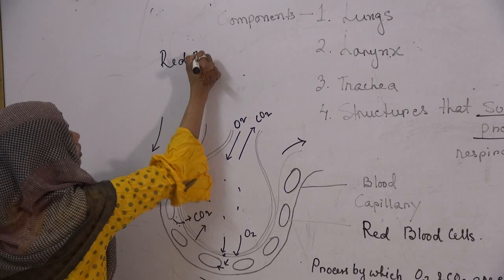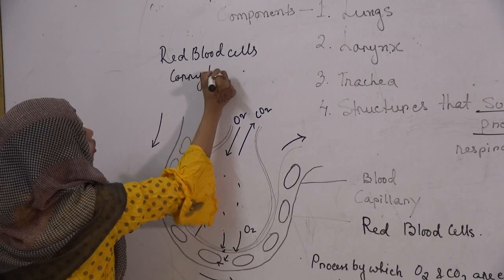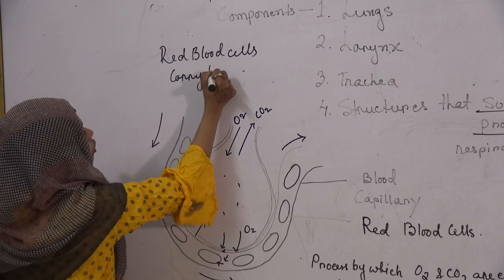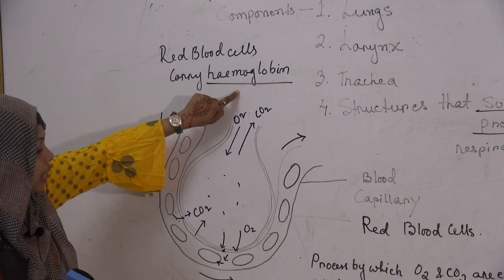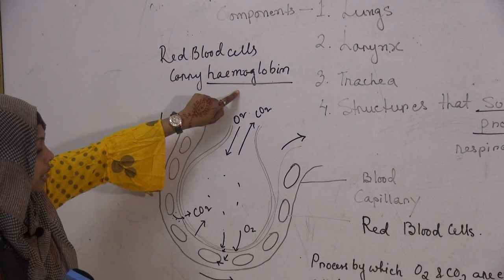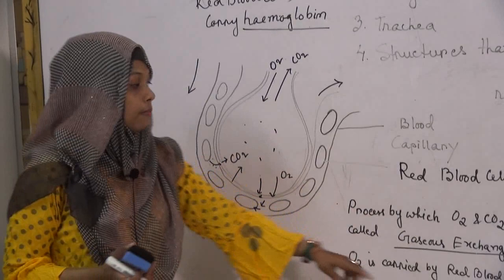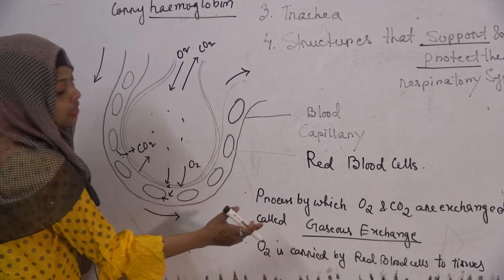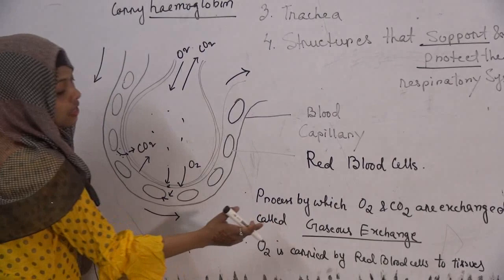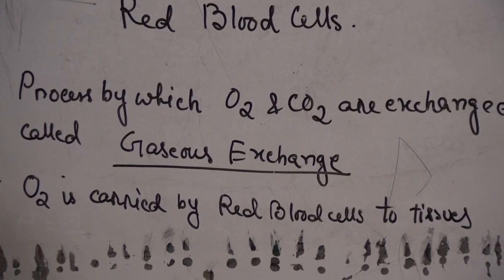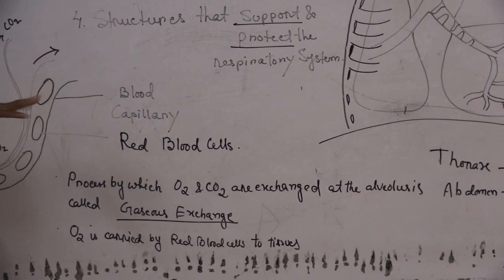Oxygen goes specifically into the red blood cells because red blood cells carry a red pigment known as hemoglobin. No other cell of the body carries hemoglobin. Hemoglobin is the only pigment able to bind to oxygen and carry it to the body tissues. The process by which this exchange of gases takes place in the alveolus is known as gaseous exchange, and gaseous exchange occurs by diffusion.